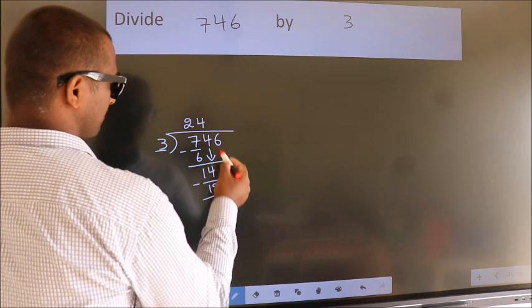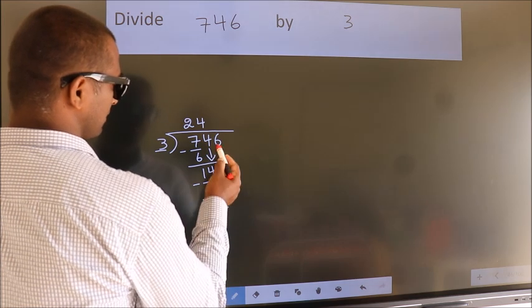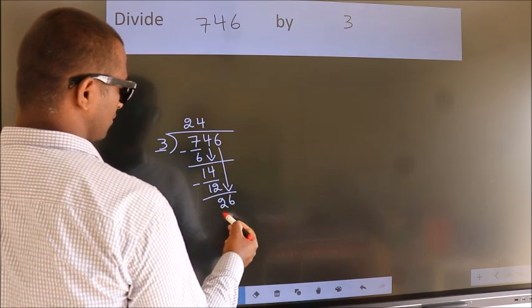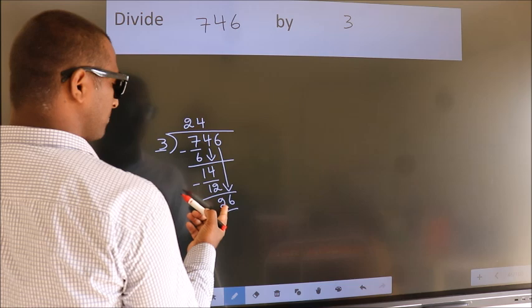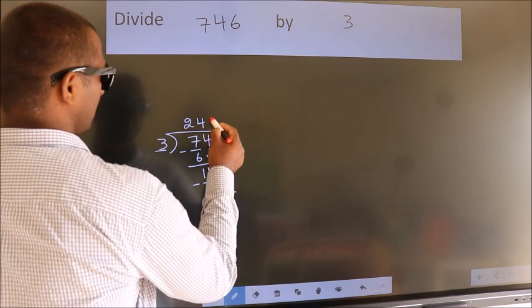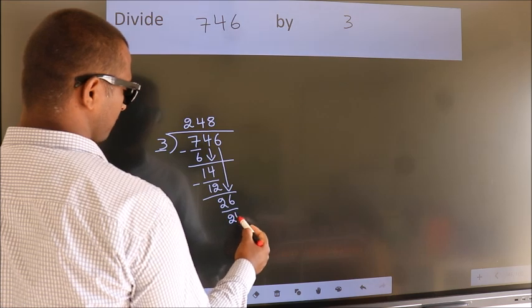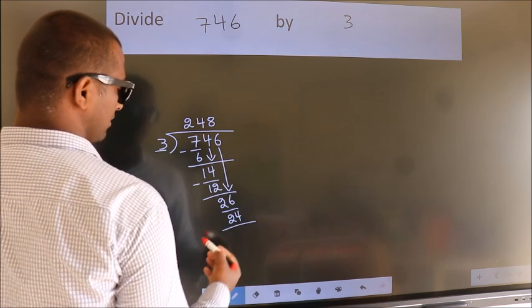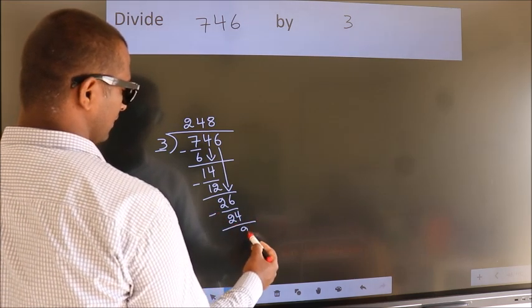After this bring down the beside number. So 6 down. So 26. A number close to 26 in 3 table is 3 8's 24. Now we subtract. We get 2.